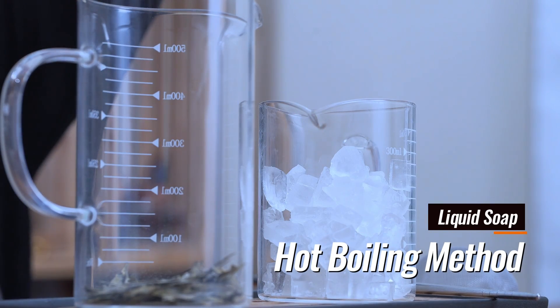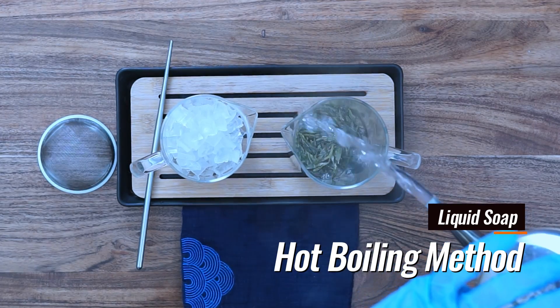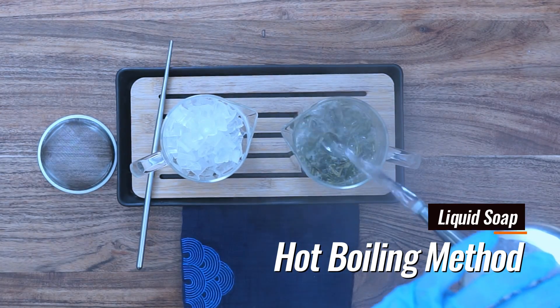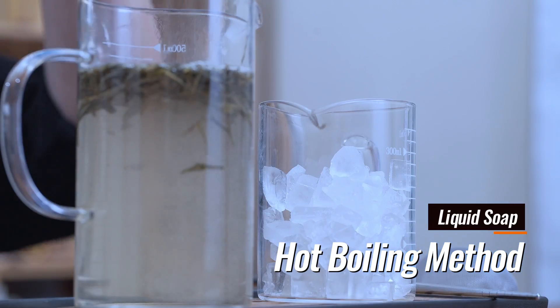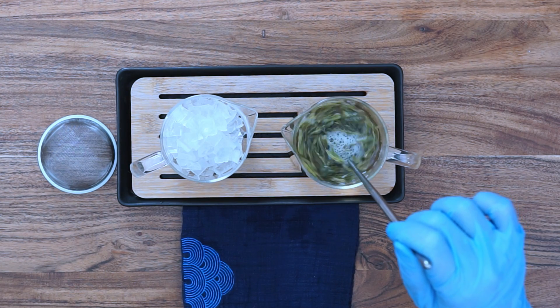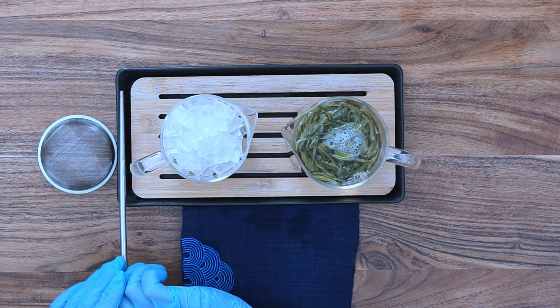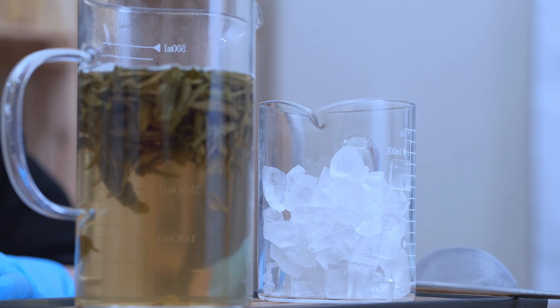The soap crystal can be melted using the hot boiling method, which involves either soaking it in hot boiling water or boiling it directly on the stove. Both methods are effective in quickly melting the soap crystal. In this video demonstration, I'm showcasing a unique approach by using boiling steep tea to soak the soap crystal.